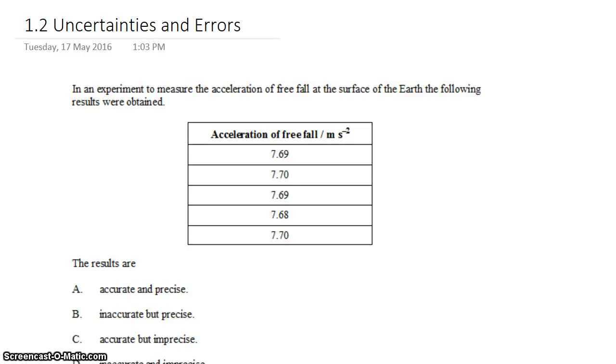David Kahn here with another IB question from Topic 1.2. We're looking at accuracy and precision. In this question, we have an experiment that was used to measure the acceleration of free fall at the surface of the earth, and we got these results.